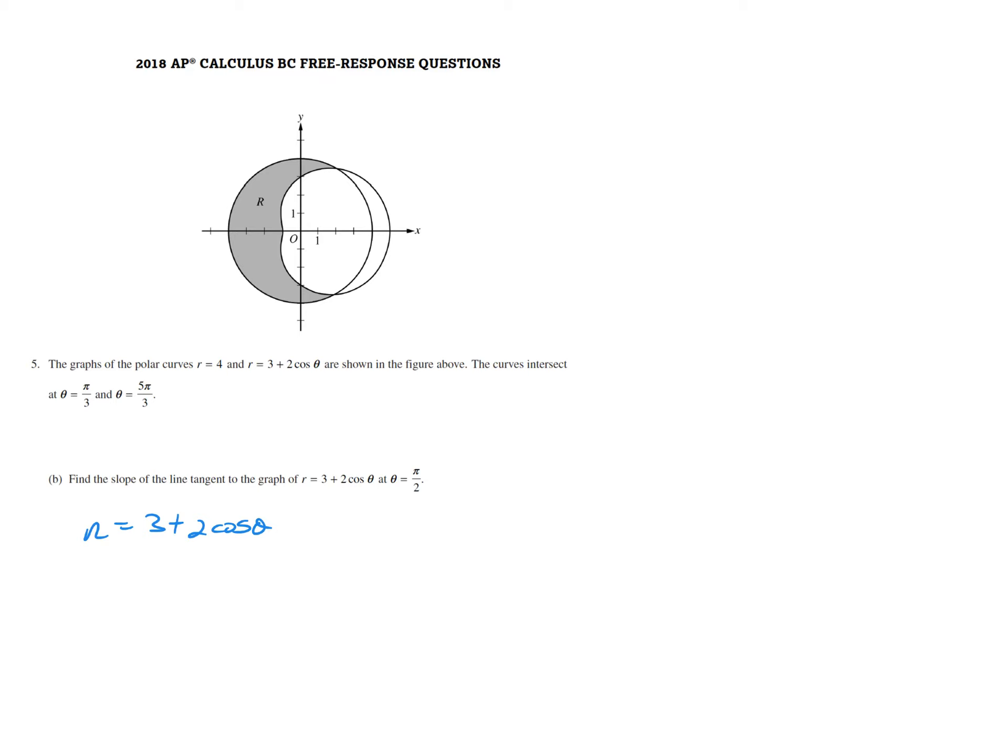We know that we can express polar graphs parametrically, where x equals r cosine theta and y equals r sine theta. In this particular case, with r being quantity 3 plus 2 cosine theta, x would equal quantity 3 plus 2 cosine theta times another cosine theta, and y equals quantity 3 plus 2 cosine theta times another sine theta. Our goal is to find dx d theta and dy d theta, keeping in mind that dy dx is going to equal dy d theta over dx d theta.